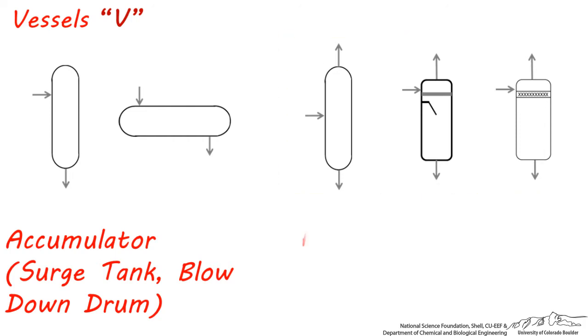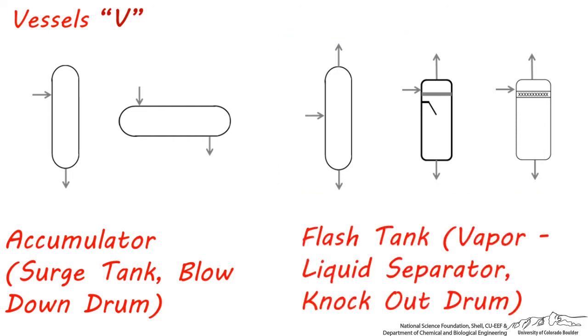These three symbols are common representations of flash tanks, which are also sometimes called single-stage vapor-liquid separators or knockout drums. Even though these symbols are very similar to one another, it's important to understand the difference between these two types of vessels.